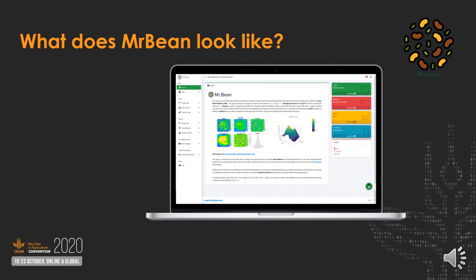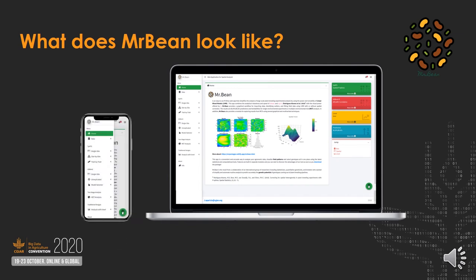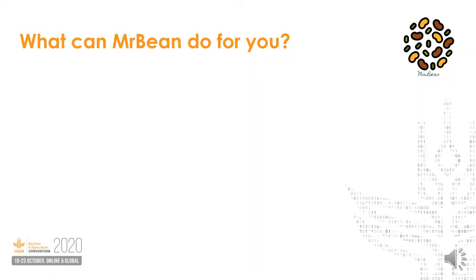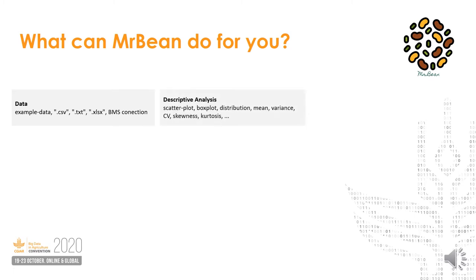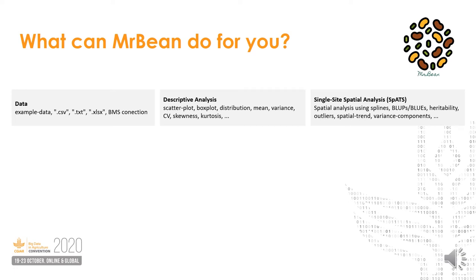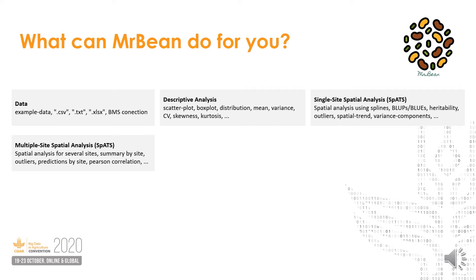This is basically the home page for Mr. Bean. If you want to give it a try, you can use your cell phone or your computer by following the next link. What can Mr. Bean do for you? First, it allows you to import data regardless of file type, and it also allows you to connect with a breeding management system so you can get the data directly from Mr. Bean. Once you have the data, you can jump to descriptive analysis, then fit spatial analysis using SPATS. If you have more than one site, you can run multiple sites, and if you have more than one trait, you can run multiple traits.